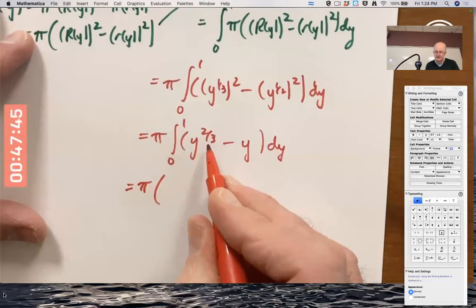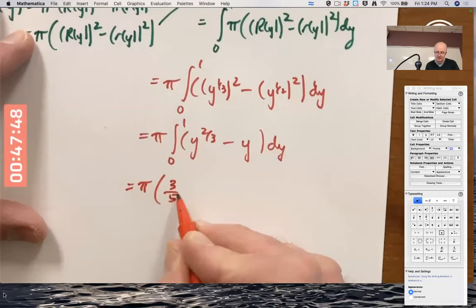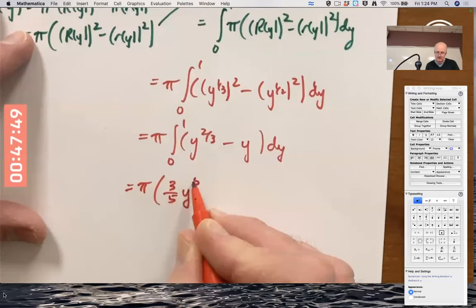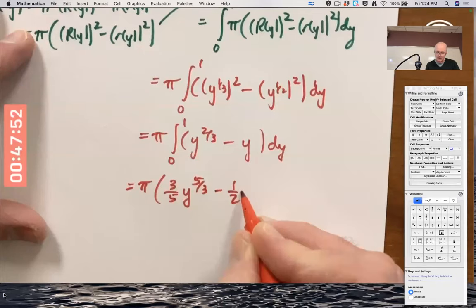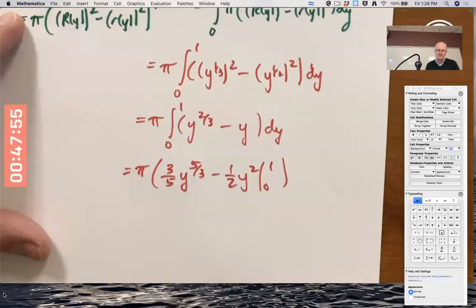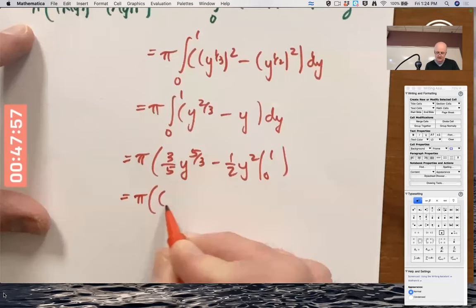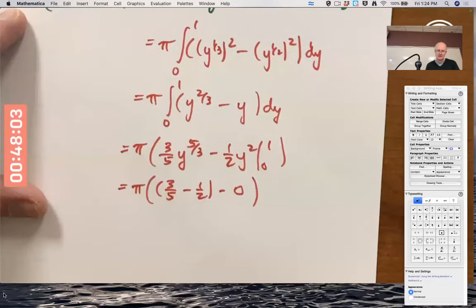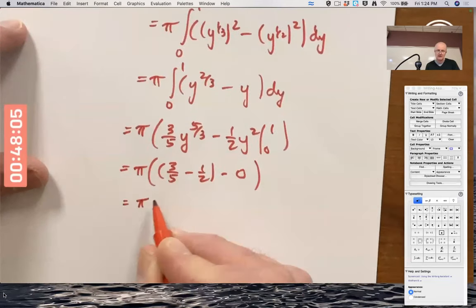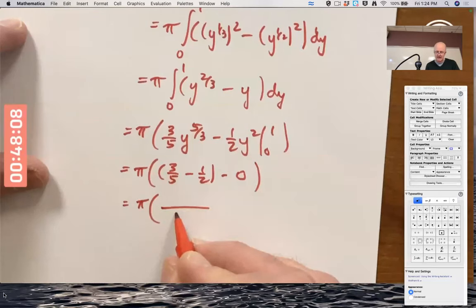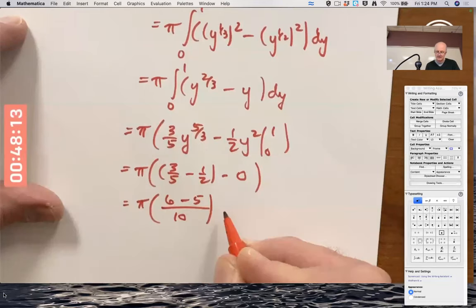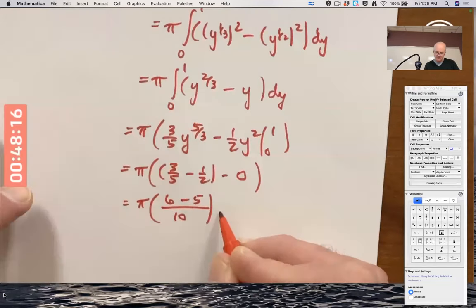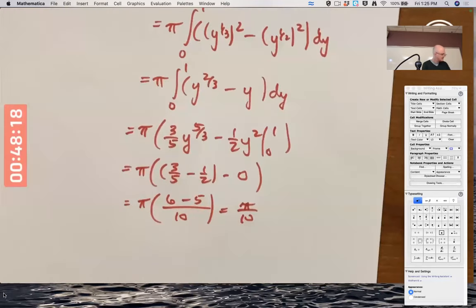Two-thirds plus one is five-thirds. When you divide by five-thirds, it's the same as multiplying by three-fifths. Integrate y, you get one-half y squared going from zero to one. Plug in one, get three-fifths minus one-half. Plug in zero, get zero. Get a common denominator of 10. Going to have six minus five over 10. Pi over 10 looks like the answer.